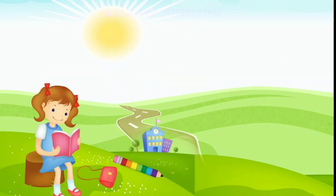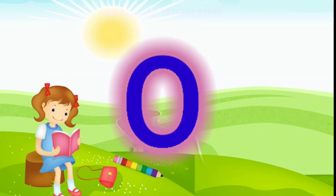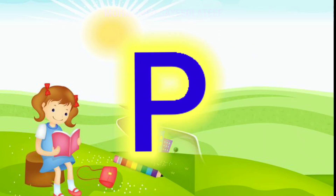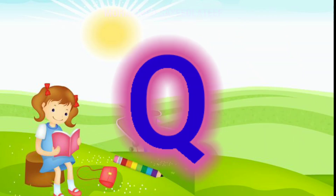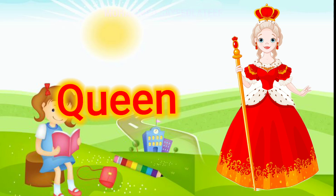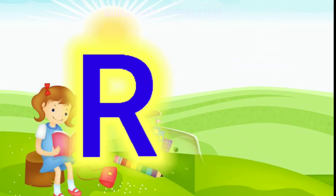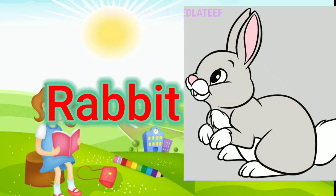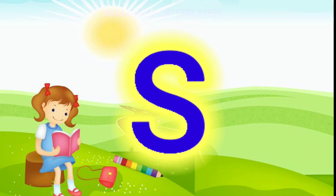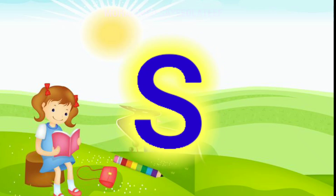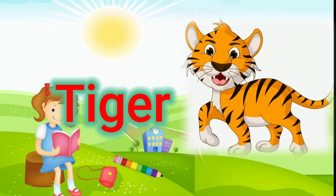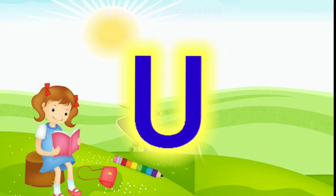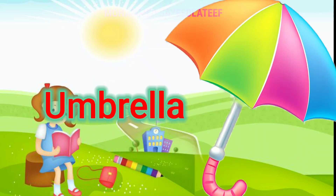N for nest, O for orange, B for parrot, Q for a queen, R for rabbit, S for sheep, T for tiger.